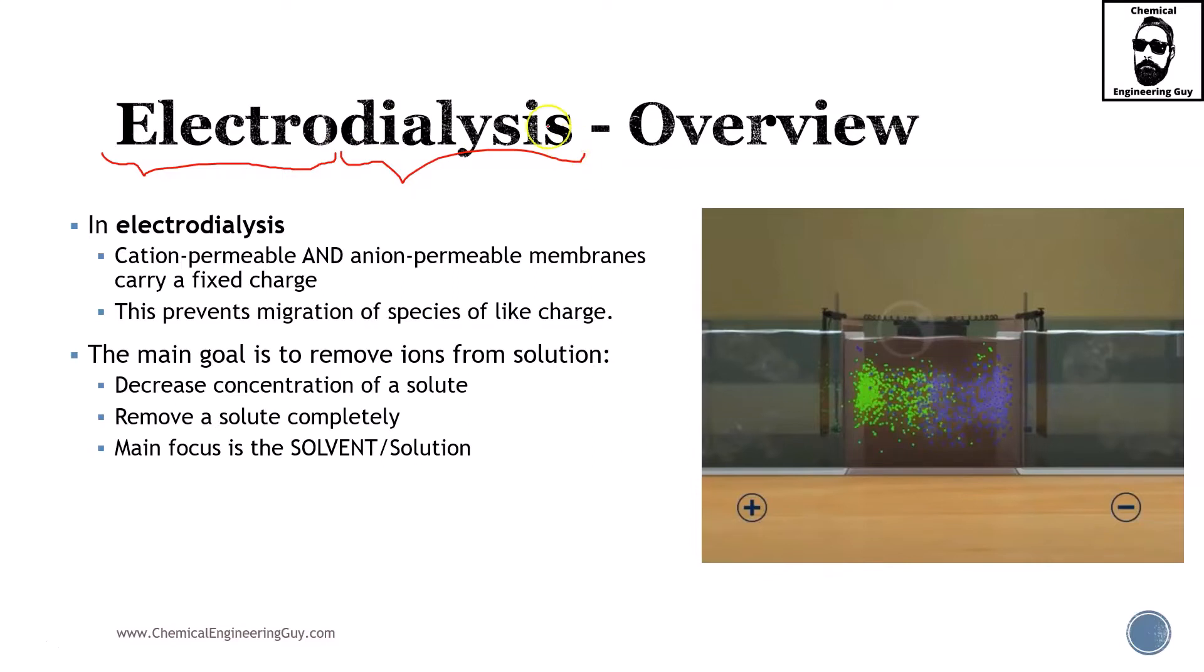What was the overall concept of dialysis? We will be using a permeable membrane which allows cation and anion flow. This is of interest because we want to selectively move cations and anions according to their charge. This will prevent migration of species of similar charges.